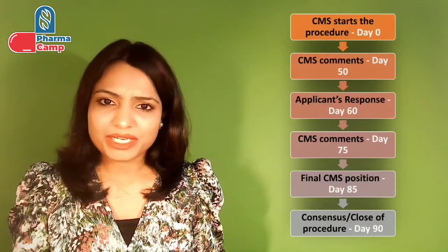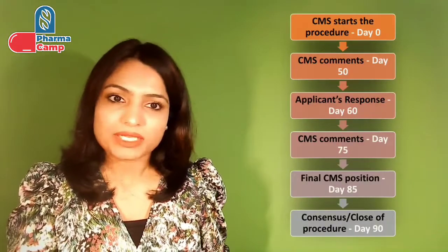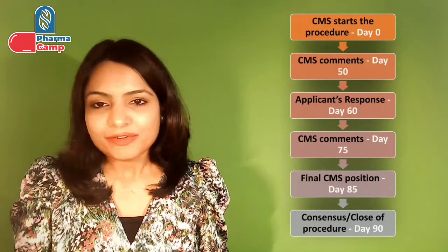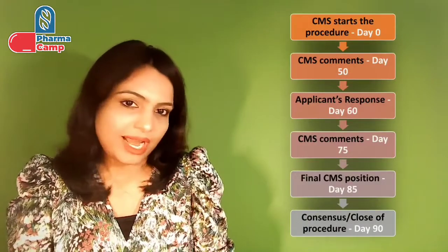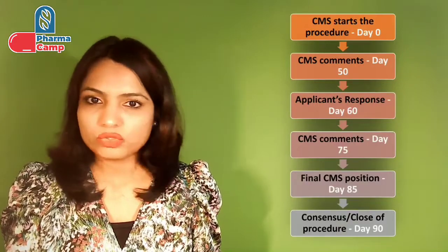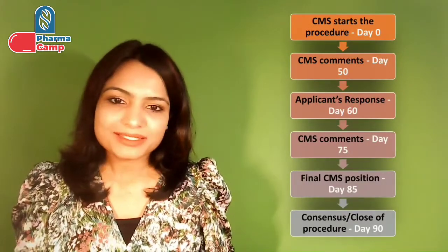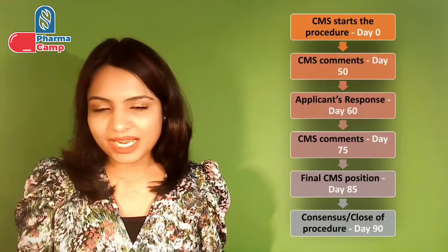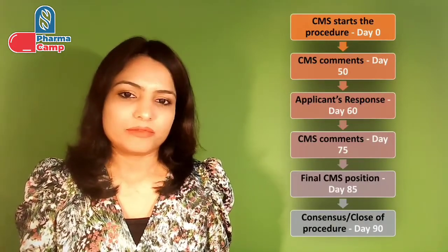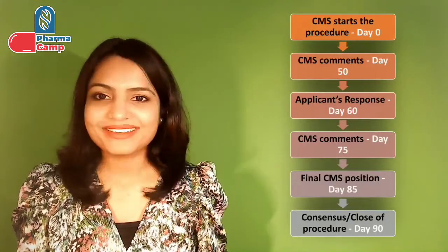If there are any further remaining comments, CMS will again send these to RMS and to the applicant by Day 75. If required, a breakout session or discussion can also be conducted between RMS, CMS, and the applicant to resolve issues. Once the applicant submits the response by Day 85, CMS takes their final position. If all CMS agree, RMS closes the review cycle by Day 90. But if there is disagreement between RMS and CMS, they will reach out to CMDH, and if still unresolved, it will be referred to CHMP for arbitration via referral.